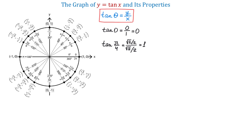Now, let's pick one more angle — pi over 2. At this angle, 1 divided by 0 is undefined. Then, we will write that tangent of pi over 2 is undefined.